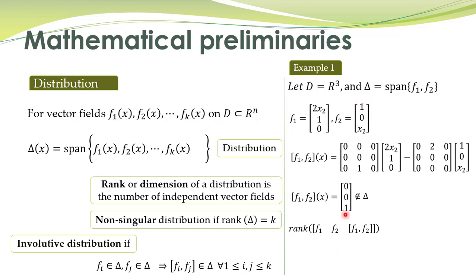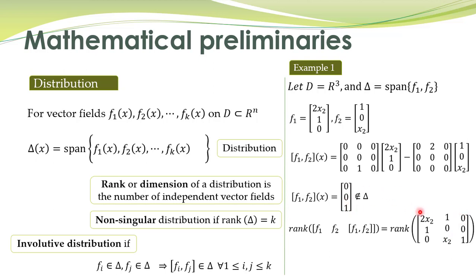Another way to check whether the resulting vector belongs to this distribution is by checking the rank of the matrix formed by the vector fields and the Lie bracket. If the Lie bracket vector belongs to the distribution, the rank will be the same as the rank of the distribution. If it does not belong, the rank will be equal to 3. The rank comes out to be 3, meaning this third vector does not belong to this distribution. Therefore, delta is not an involutive distribution.